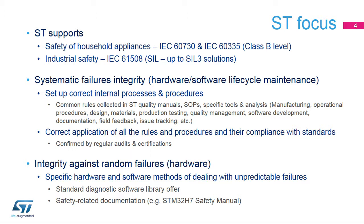ST, in compliance with these standards, cares about both systematic and random failures. Systematic failures are predictable, and their avoidance and monitoring are based on practical experience gained in the industry. Systematic failures can be avoided mainly by applying correct internal processes throughout a product's life cycle. These requirements are defined in specific internal quality documentation.